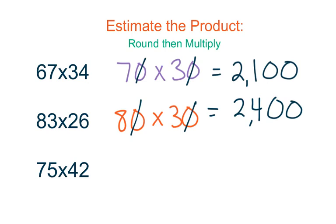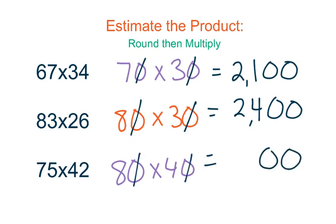My last problem is 75 times 42. I'm going to round: 75 rounds up to 80 and 42 rounds down to 40. So I multiply 80 times 40 to find my estimate. I cross my two zeros out, place them in my product, and then 8 times 4 is 32, so my estimate is 3,200. When we're estimating, make sure we're rounding first and then multiplying. It's always important to estimate before we multiply to make sure our product is in the right range.